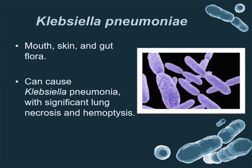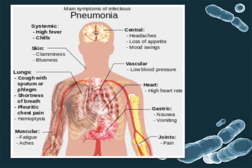Klebsiella pneumoniae — they are found around the oral area, skin flora, and gut flora. Klebsiella pneumoniae can cause pneumonia with significant necrosis and hemoptysis. Necrosis of the pneumonia is the death of lung tissue, and hemoptysis is the coughing up of blood from any part of the respiratory system.